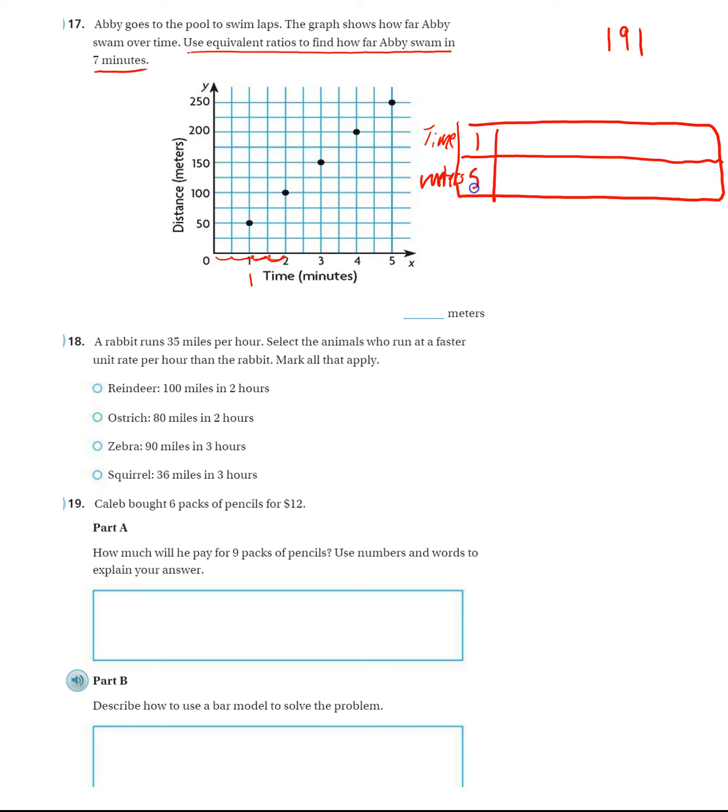So, one to 50, one minute to 50 meters, two minutes to 100 meters, and so on. So we're adding 50 each time. So we can see for seven minutes, which is what the problem wanted to know, seven minutes, she went 350 meters.